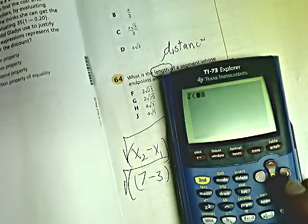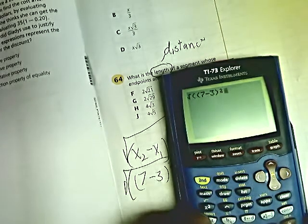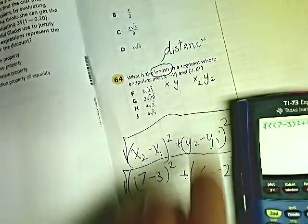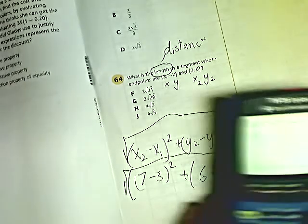hit the square root, then hit the square root again. Then you do seven minus three squared, plus, because I did x minus x, and then I do six minus negative two. Close that and square it. It's very long.